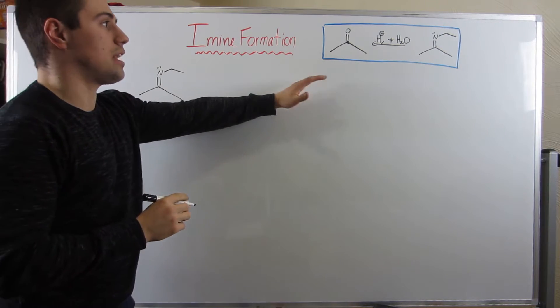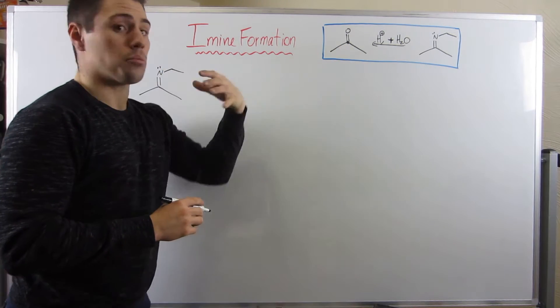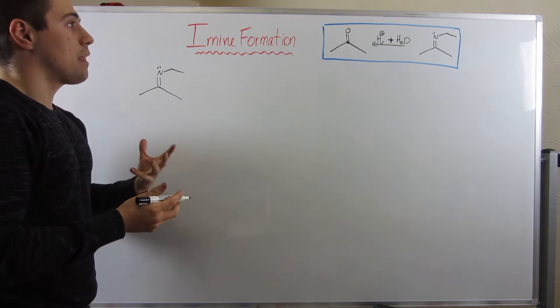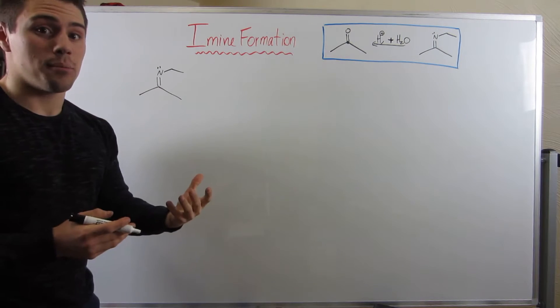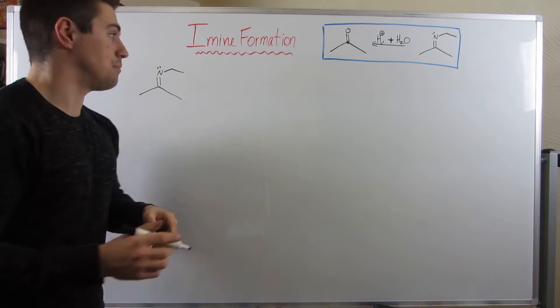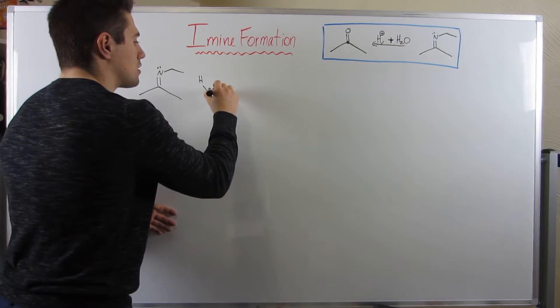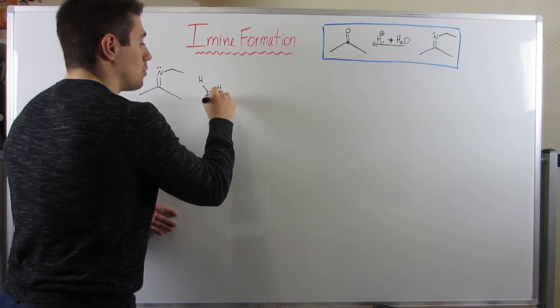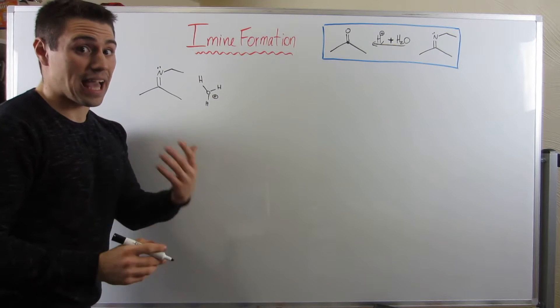So let's redraw the imine we produced in the forward mechanism. Remember, we have no nitrogen at all in this carbonyl precursor product. So you can imagine we need to get rid of him, a.k.a. we need to protonate him. So let's make that our first step. Let me draw some hydronium, which we will no doubt reproduce in the end because it's catalytic.